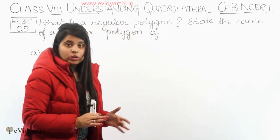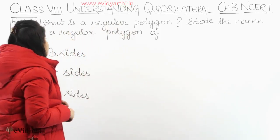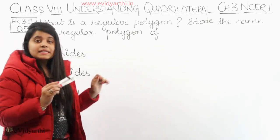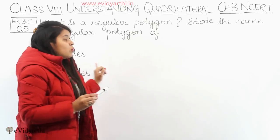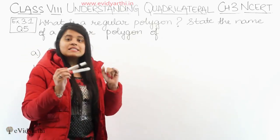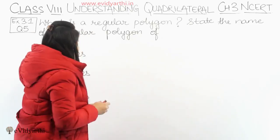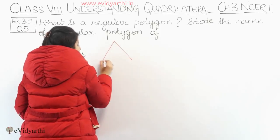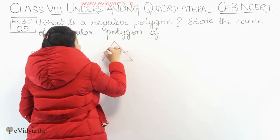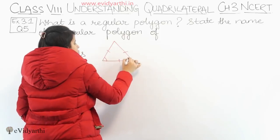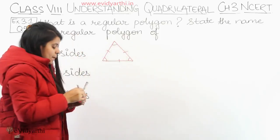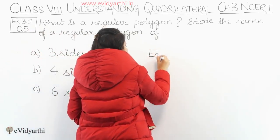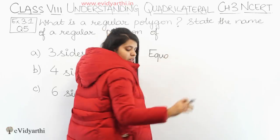Next we have state the name of a regular polygon of part A: three sides. The polygon should have equal angles and equal sides. So that can be an equilateral triangle, because an equilateral triangle has all sides equal plus its angles are also equal.